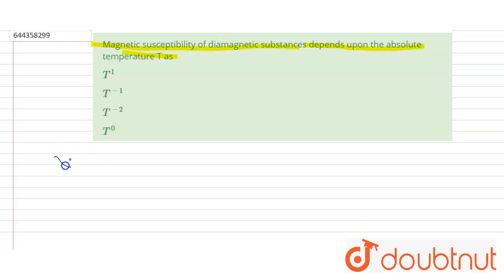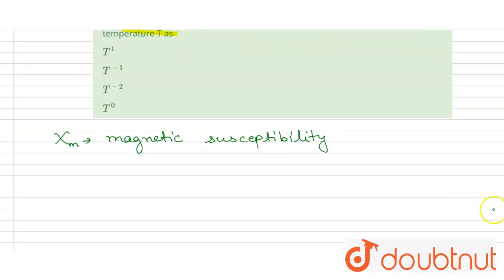χm is the magnetic susceptibility for diamagnetic materials. The relative permeability μr is less than one.